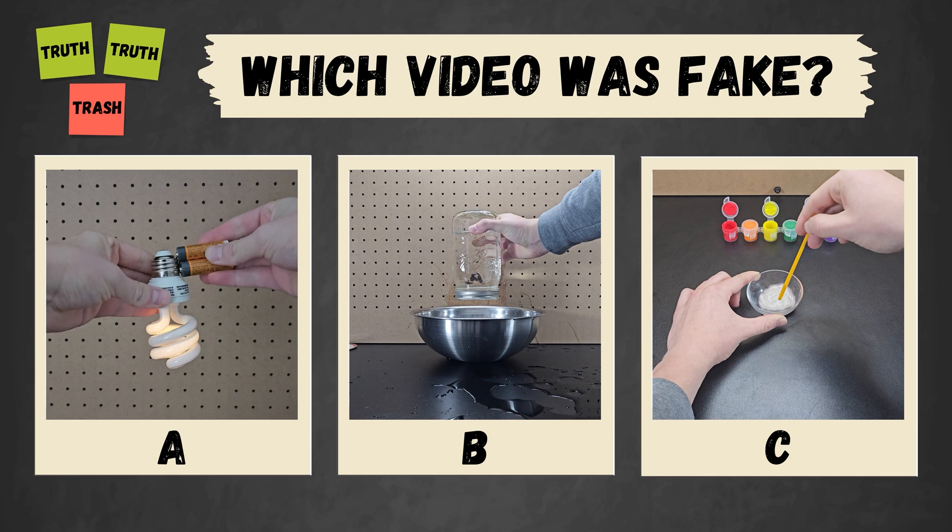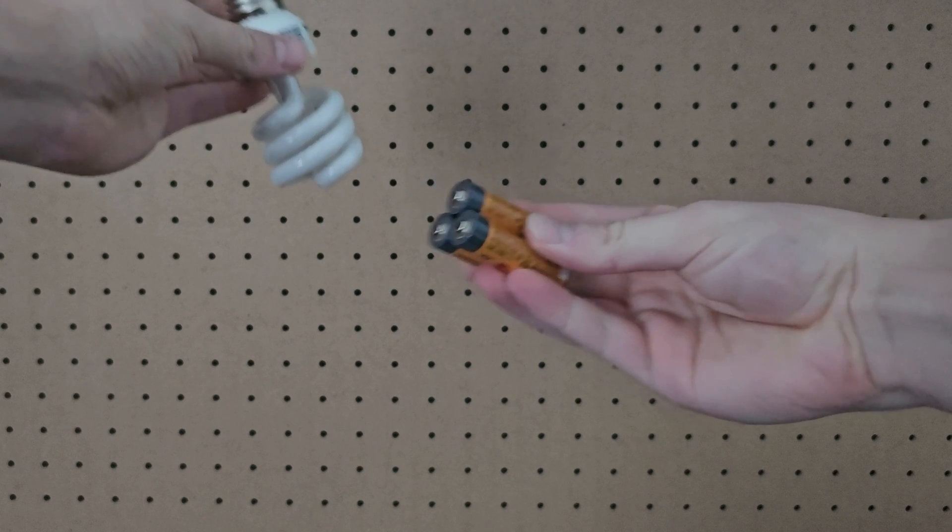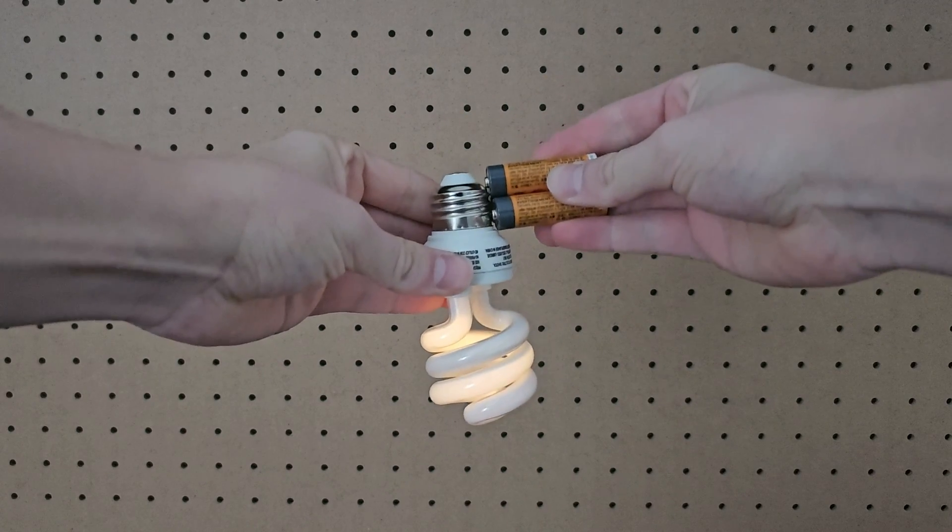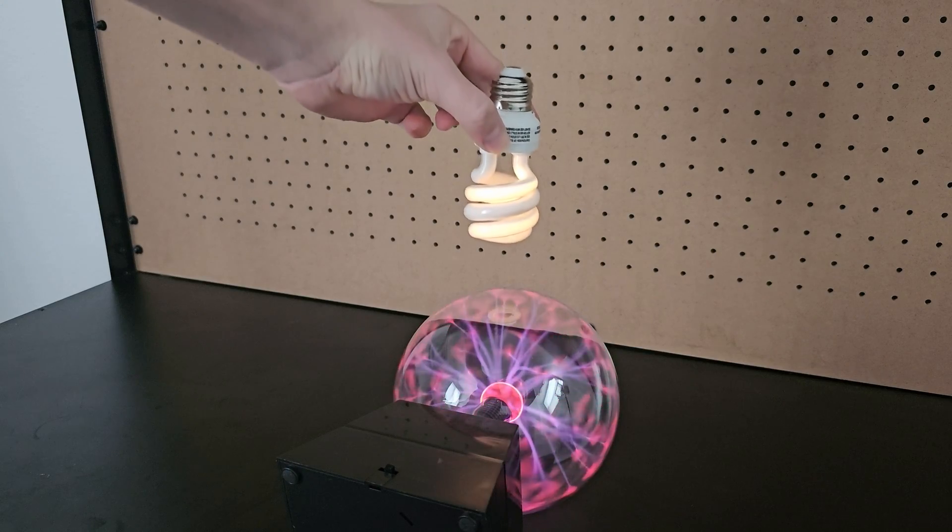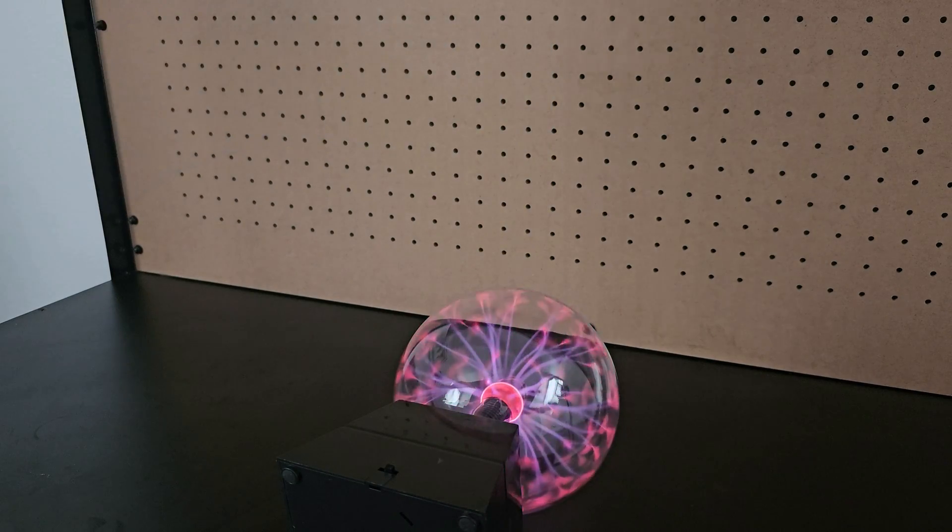If you're stressing because all of them seem pretty obviously fake, nice job because you'd be correct. For this video, as I touched the batteries to the base of the light bulb, I simply lowered it which put the light bulb in range of my plasma globe which as I've shown before can illuminate fluorescent light bulbs from a distance.